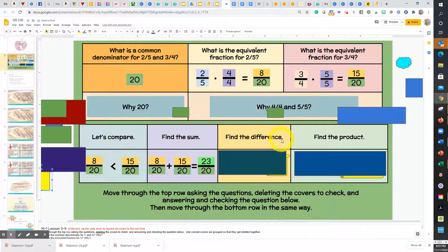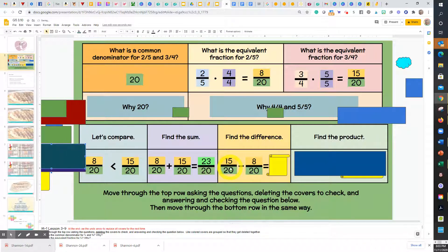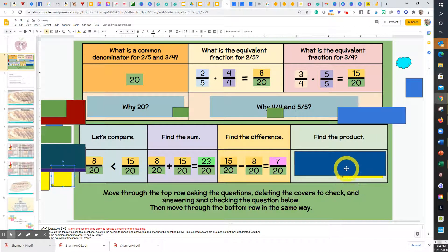Boys and girls, find the difference. Read it with me. 15-twentieths subtract 8-twentieths equals class, 7-twentieths.